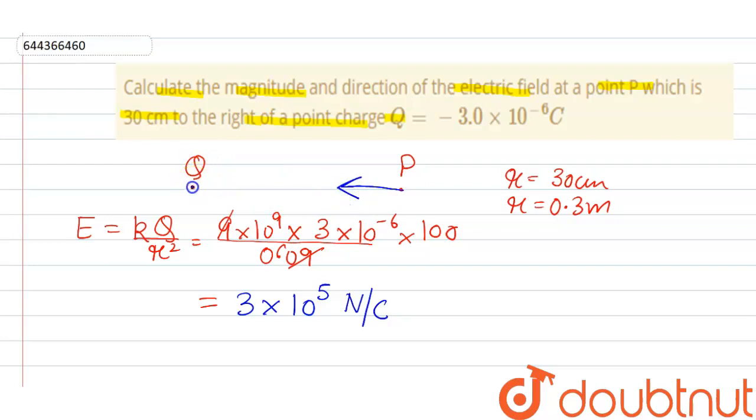the point charge Q, that is left, towards the point charge Q, because the direction of electric field intensity is towards the negative charge.